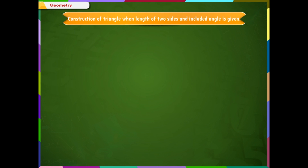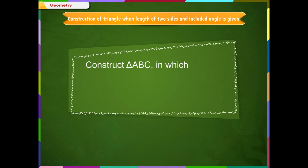Construction of a triangle when the length of two sides and the included angle is given. Construct a triangle ABC in which angle B is equal to 60 degrees, AB is equal to 4.8 cm, and BC is equal to 5.2 cm.